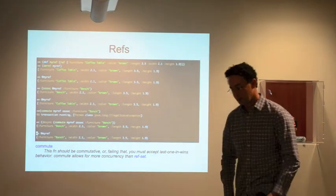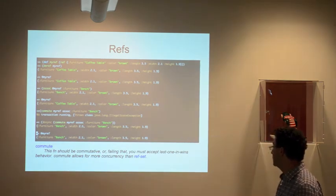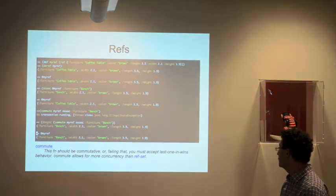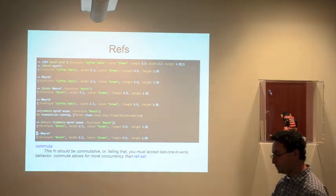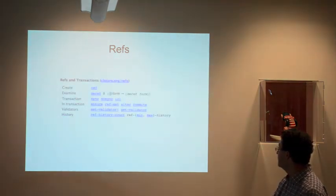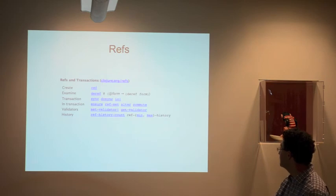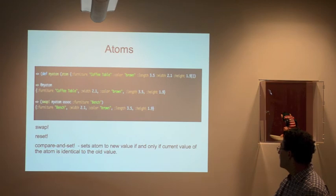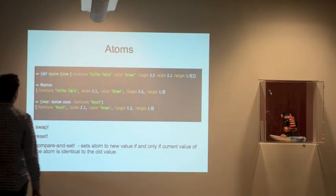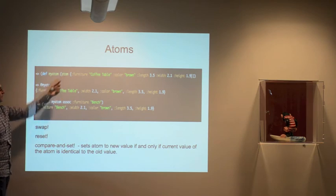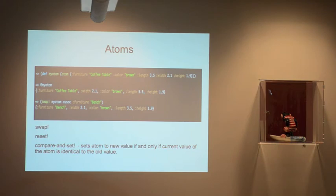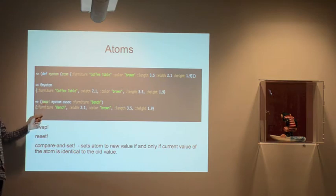Commute gives you enhanced concurrency over ref-set because it's better for commutative operations like addition or multiplication, allowing some optimizations. There are other functions available for refs like getting a history count or setting validators. An atom looks very similar — just swap 'ref' for 'atom' in the definition. You dereference it the same way, but to make changes you use 'swap!' instead, and it doesn't need to be in a transaction because of the nature of atoms.